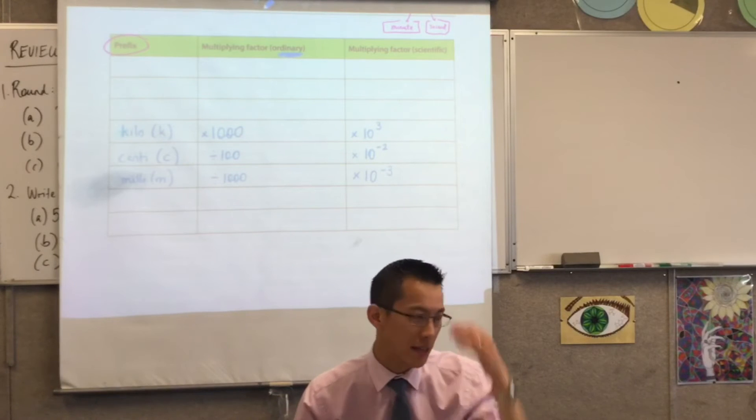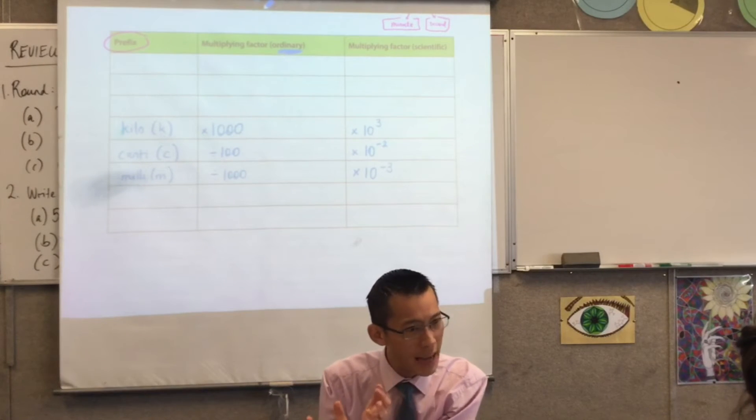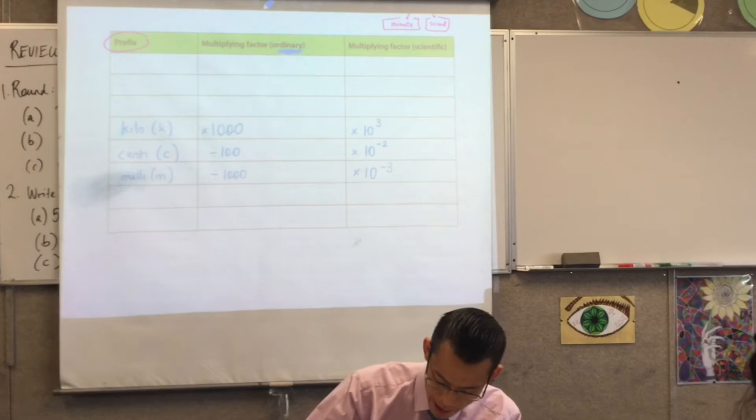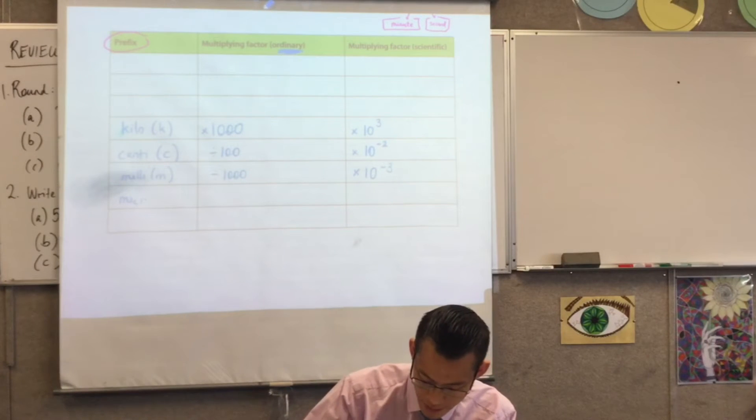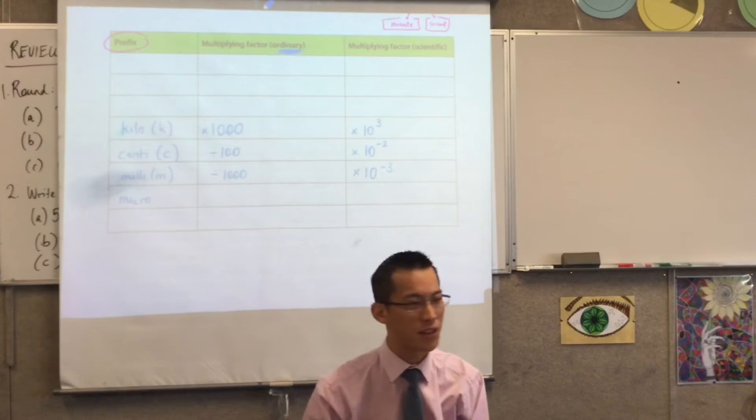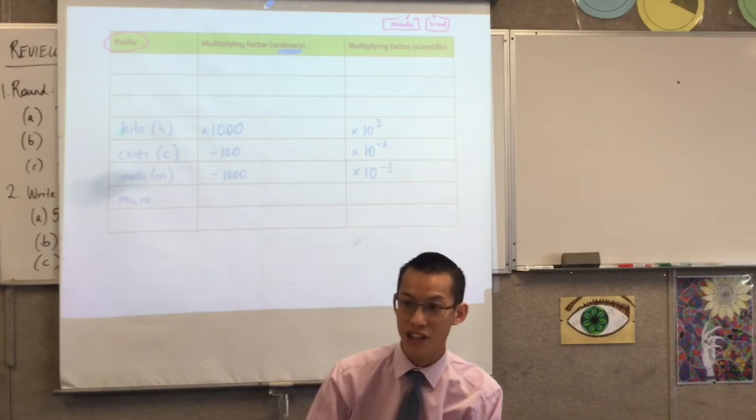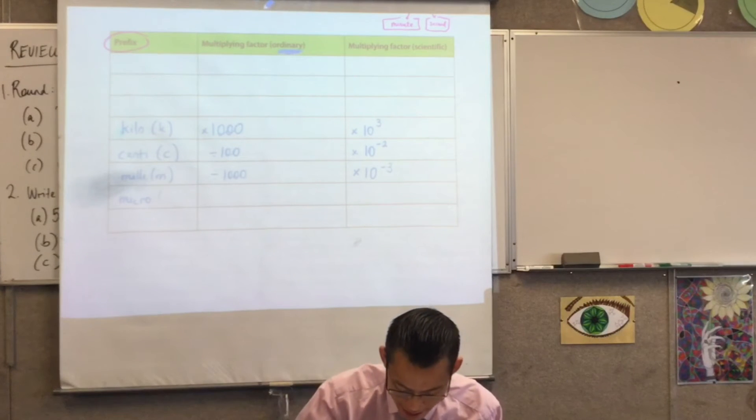Okay, now, from here, the rest of these are less common, so I'm going to fill them in, but I think once I write the names, you might know what they are. So, you've got micro, yeah? Now, because micro starts with the same letter as milli, they actually hijack the Greek alphabet, and they use this character.